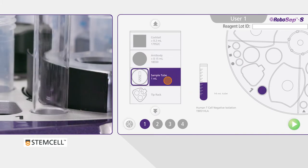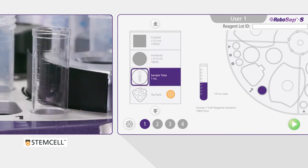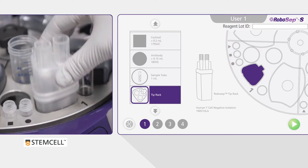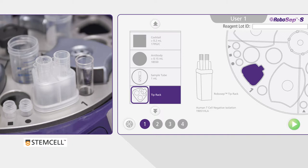Load the sample tube. When prompted for the tip rack, first remove the tip rack cap. Next, fully insert the rack into the appropriate slot.